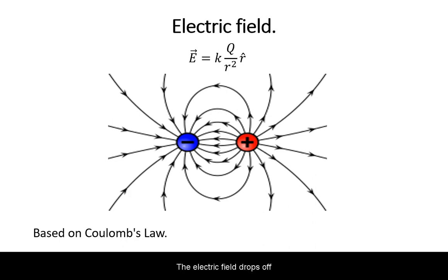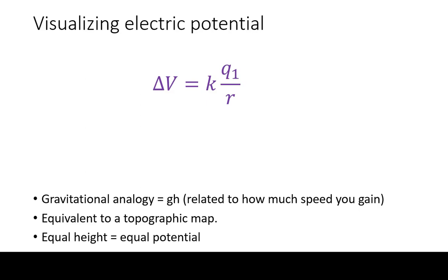The electric field drops off at distance squared, while potential drops off with distance to the first power.